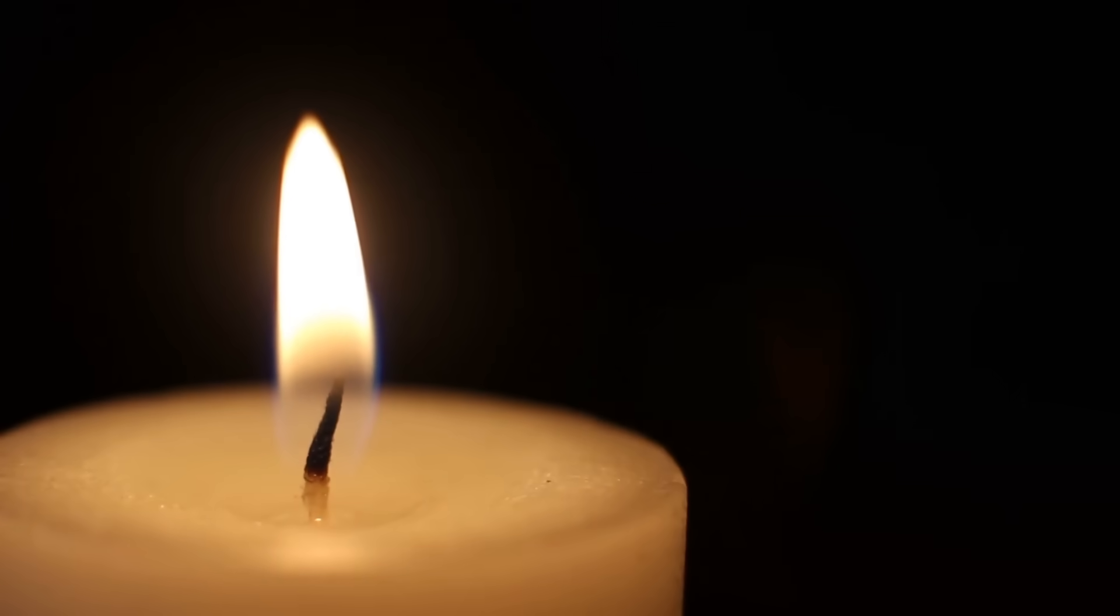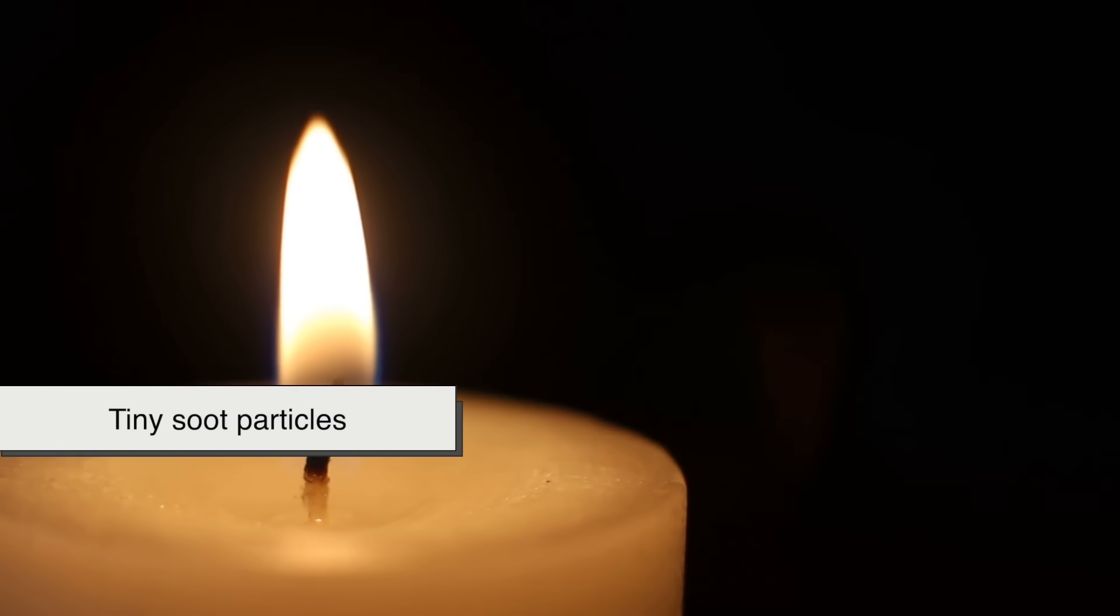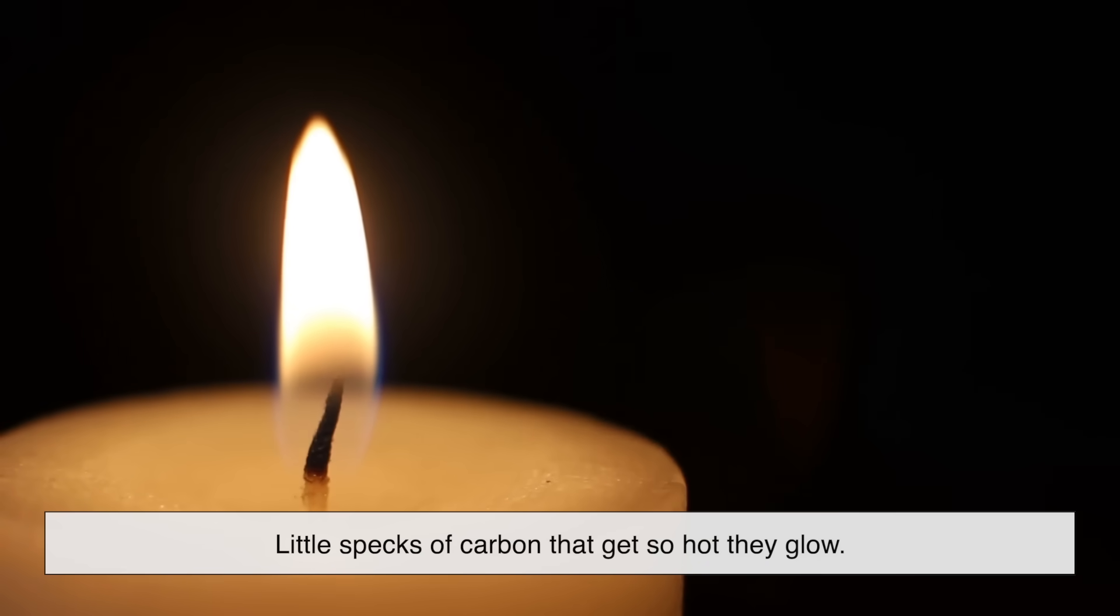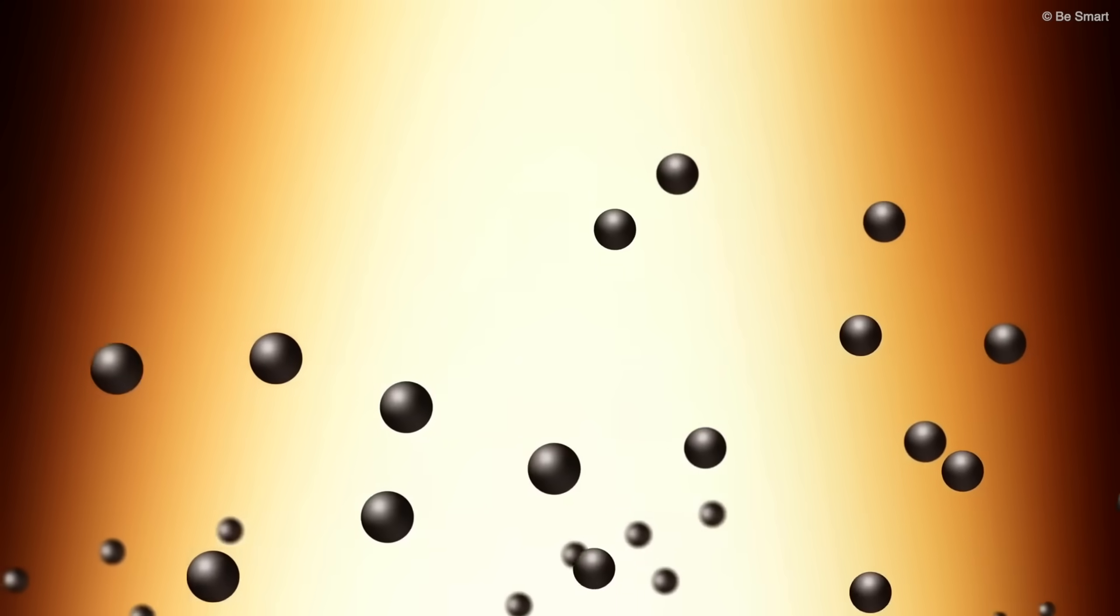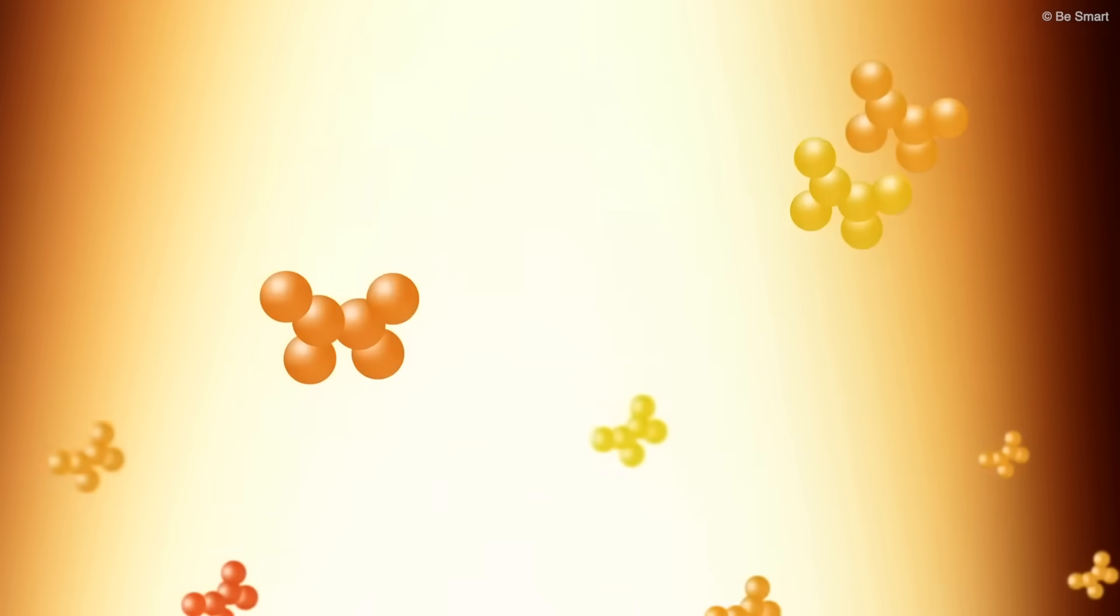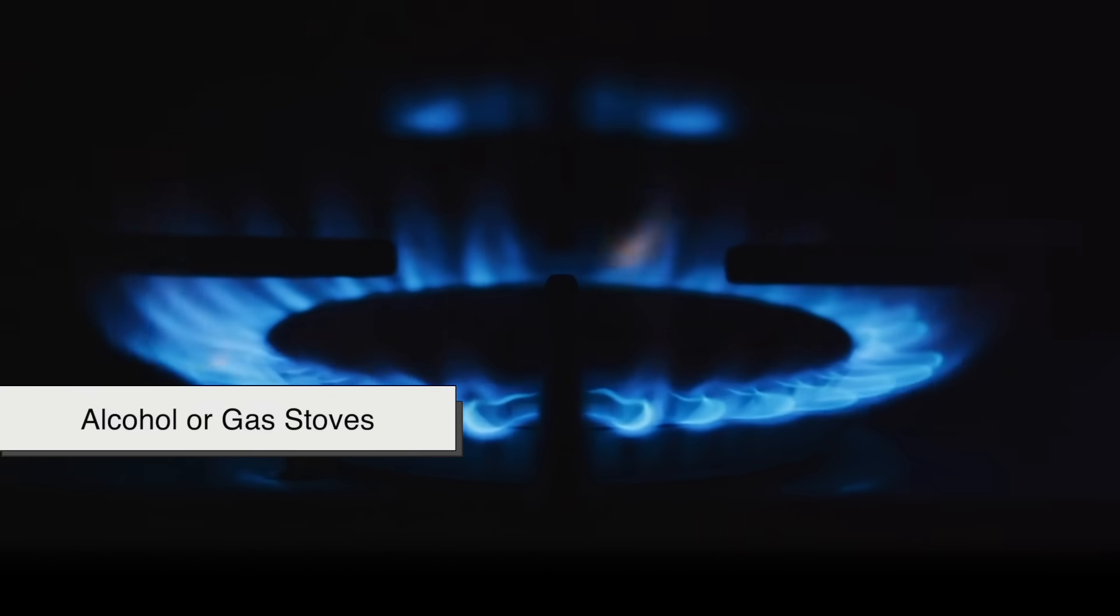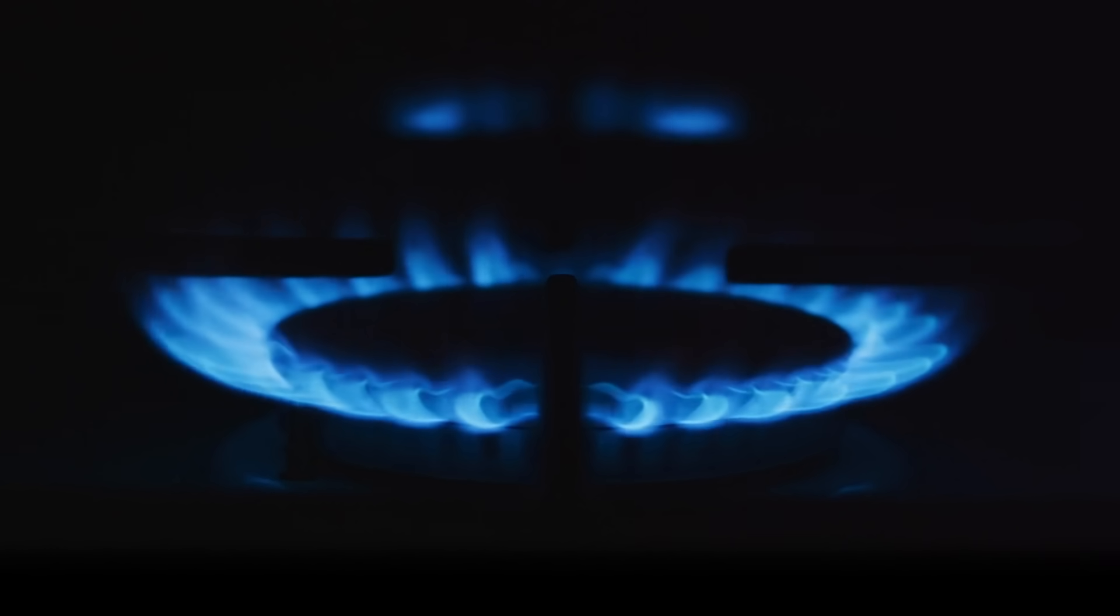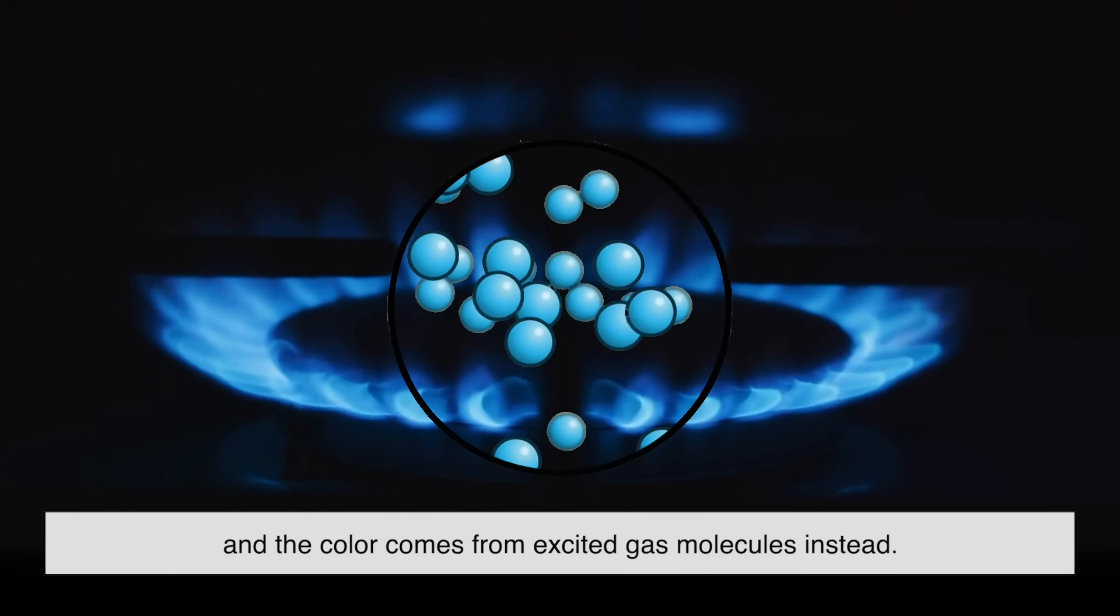The yellow part of a typical flame, like from a candle, comes from tiny soot particles, little specks of carbon that get so hot they glow. Think of them as microscopic pieces of charcoal suspended in the air, emitting light like embers. In contrast, flames that burn very cleanly, like those from alcohol or gas stoves, often appear blue. That's because they produce fewer soot particles and the color comes from excited gas molecules instead.